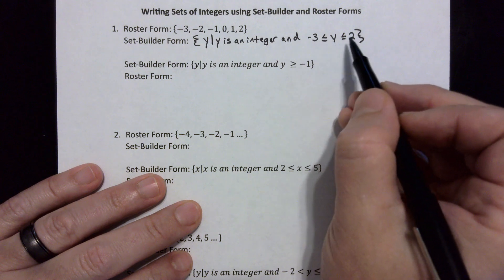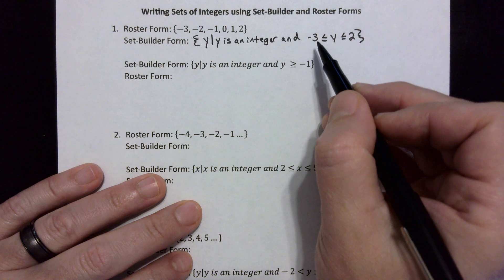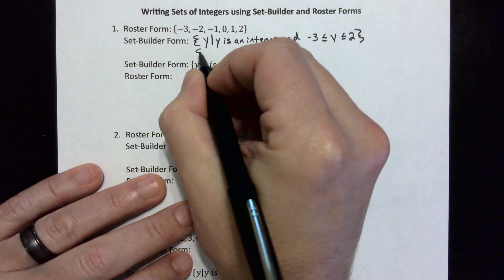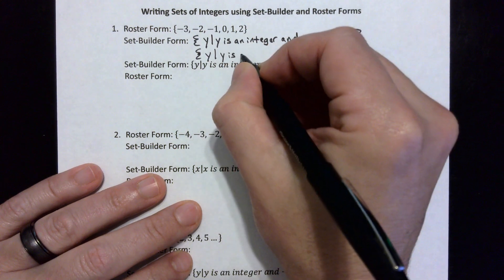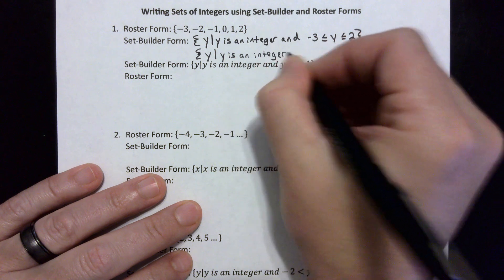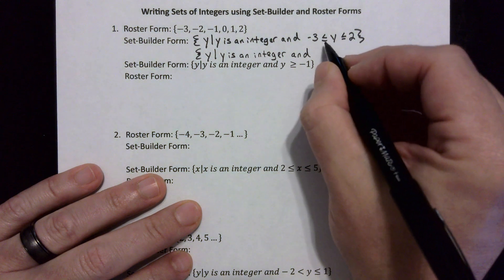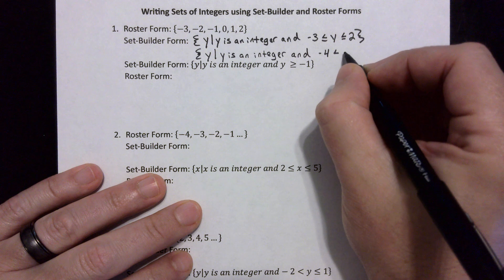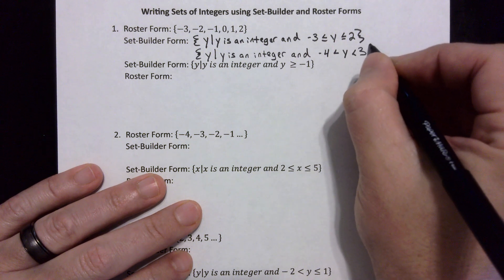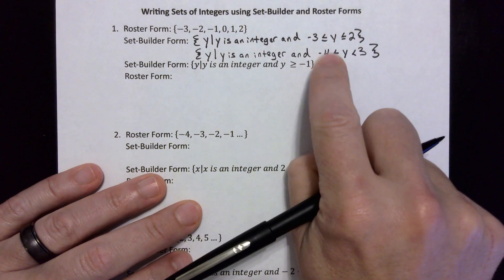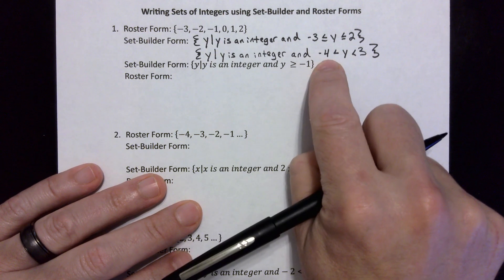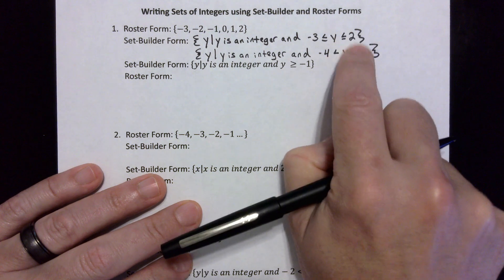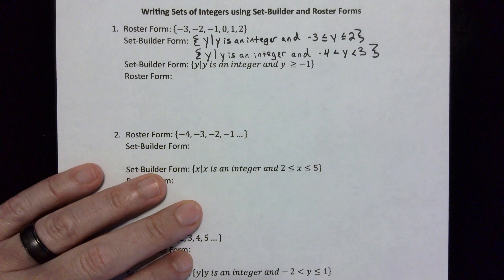That includes negative three and positive two, so this covers all whole numbers between negative three and positive two, including both endpoints. The other way of writing it is y such that y is an integer, but this time without the equal-to signs: negative four is less than y is less than three. This means all numbers between negative four and three, not including those endpoints — so negative three, negative two, negative one, zero, one, and two. Both are correct set builder forms.